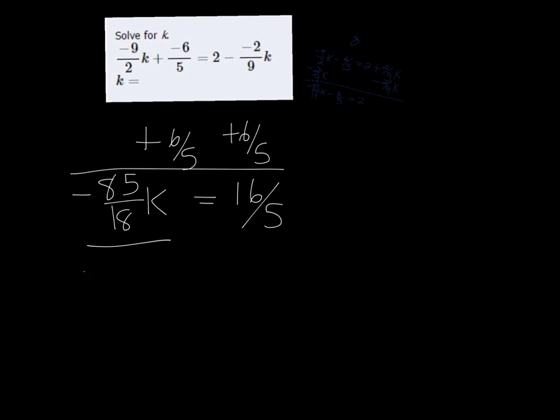Divide both sides by that coefficient on k. We want to divide by negative 85 over 18 on both sides. You can also multiply by the reciprocal—that'll work too if you've learned it that way.